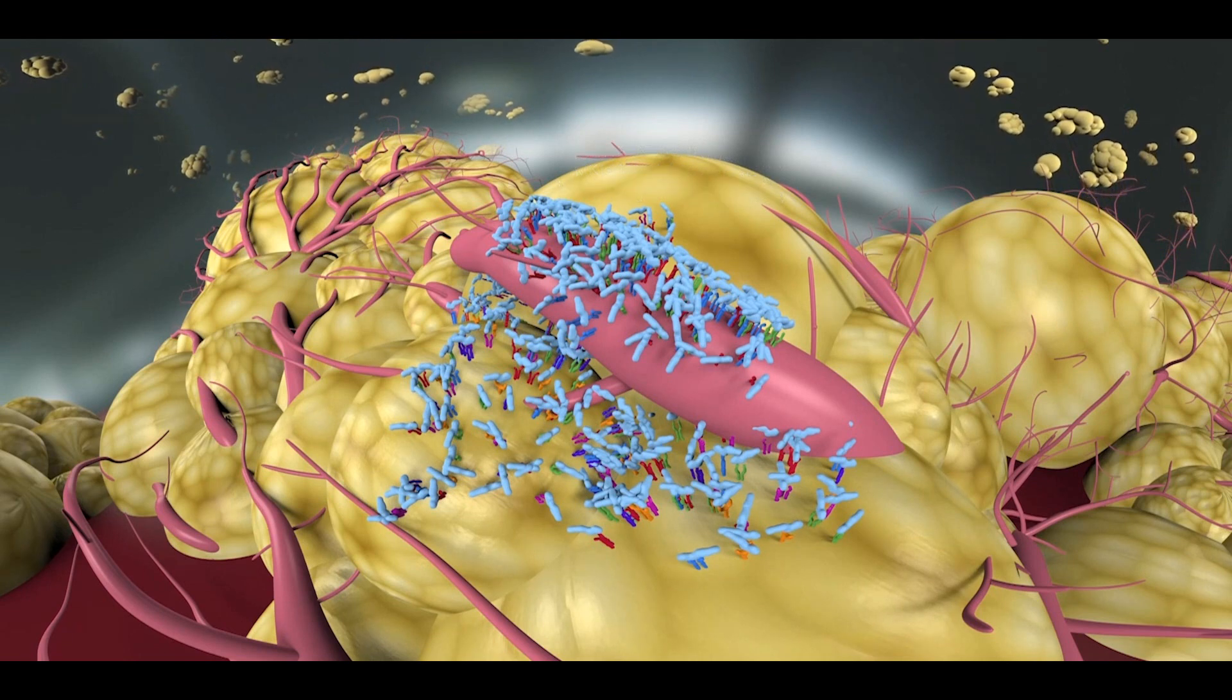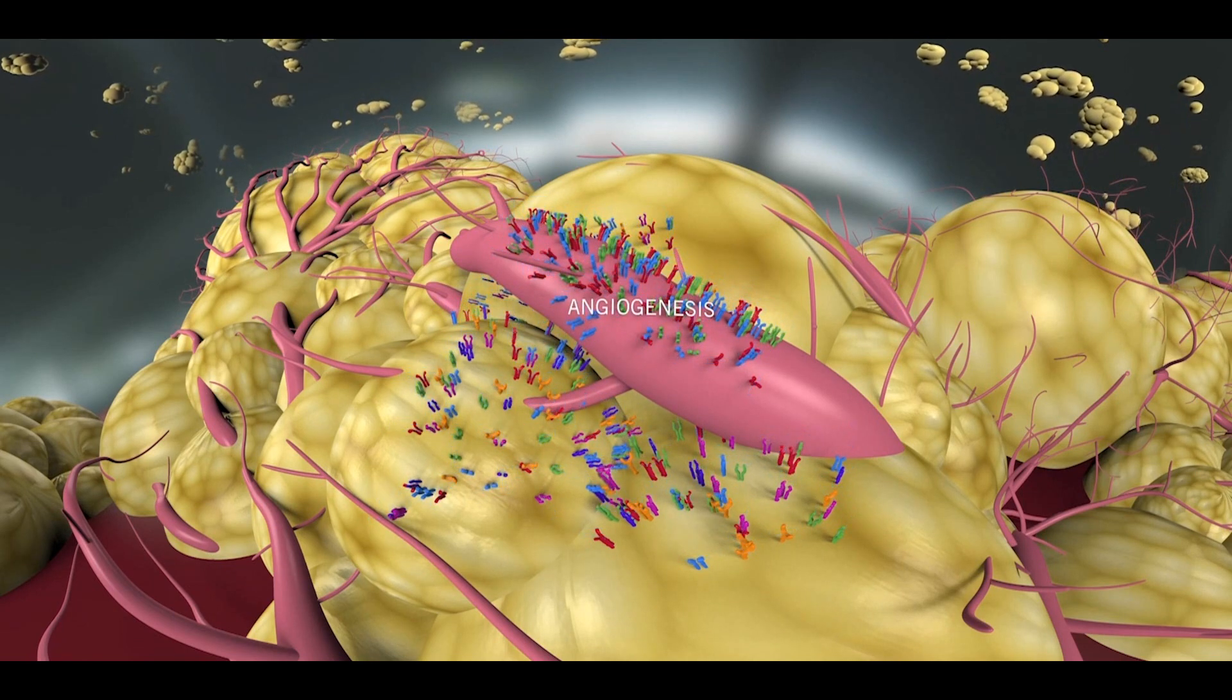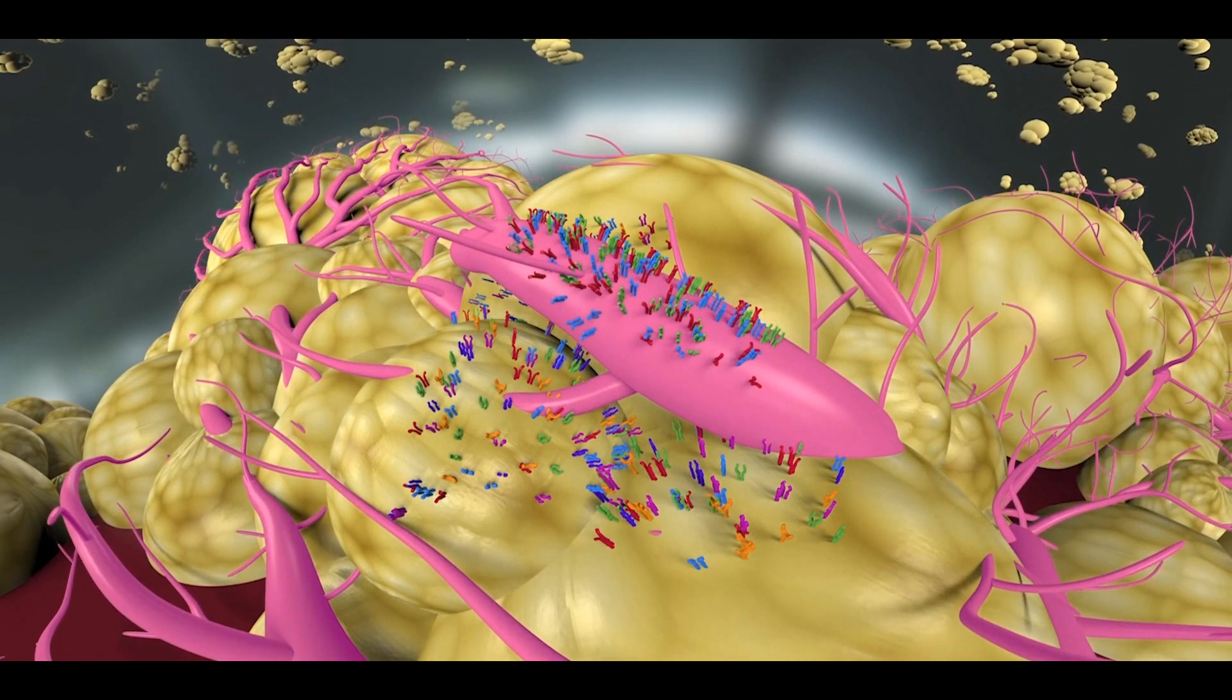Hepatocellular carcinoma is a hypervascular tumor. The initiation, growth, and metastasis of HCC relies on angiogenesis, the formation of new blood vessels from pre-existing vascular beds.